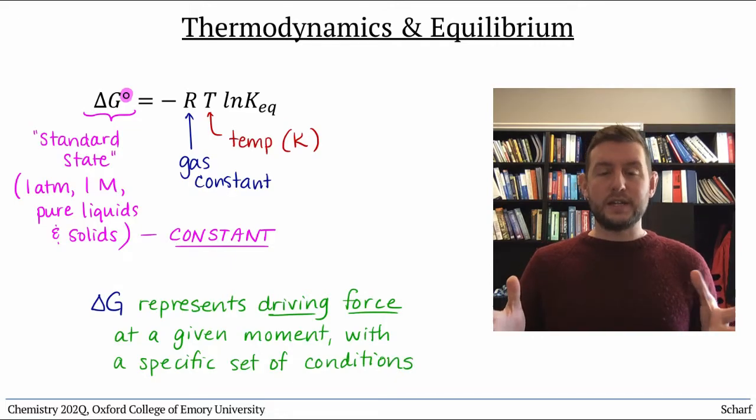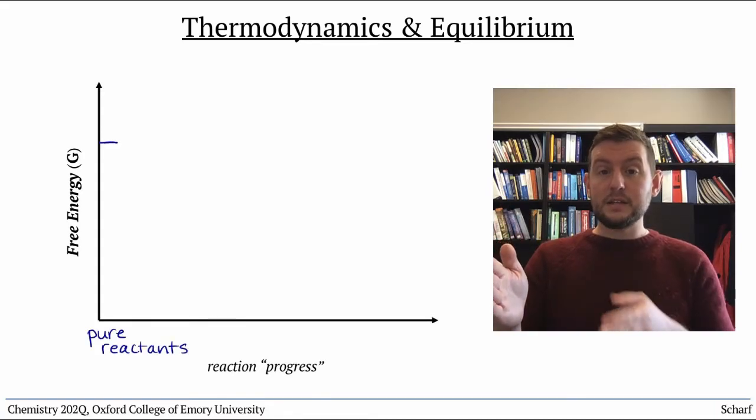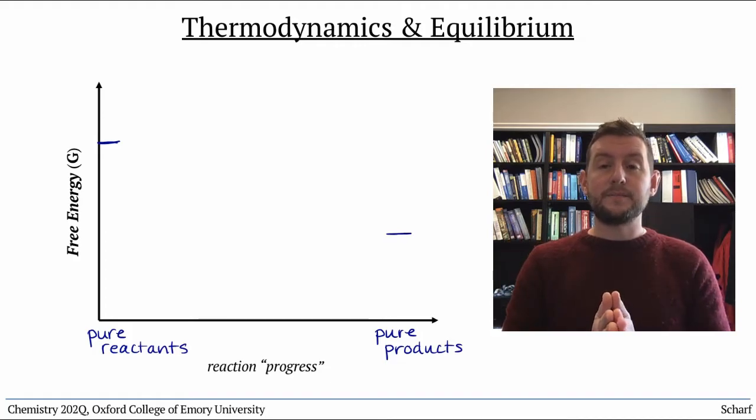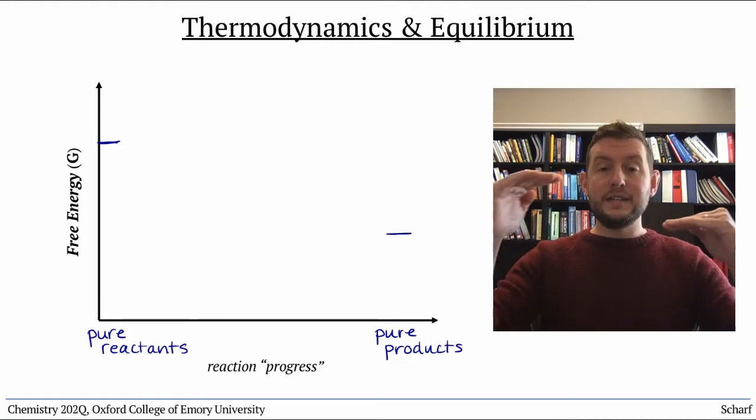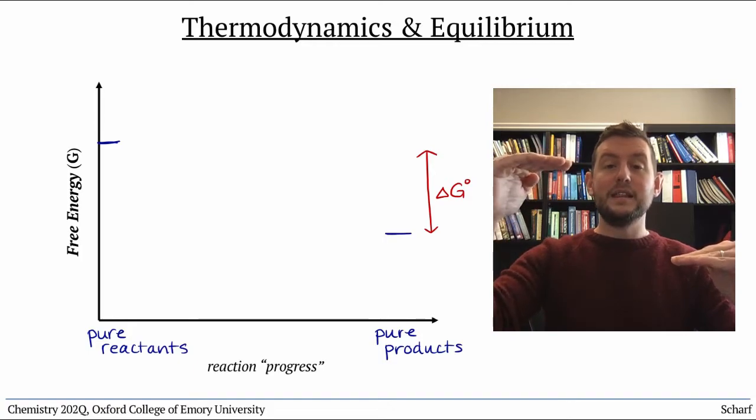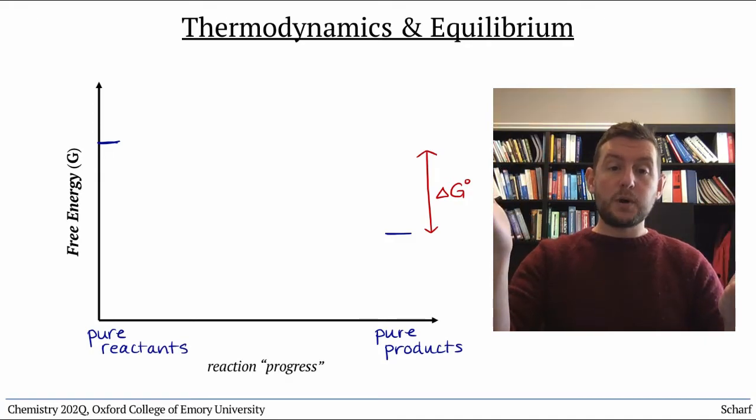Let's use a graph to help us understand this. You've already seen reaction coordinate diagrams, which show the progress of a reaction as it goes from reactants to products, illustrating the Gibbs free energy on the y axis. Delta G naught reflects the energy difference between pure products in their standard states and pure reactants in their standard states. It's basically the amount of energy that would be released or absorbed if a reaction went completely from reactants to products.